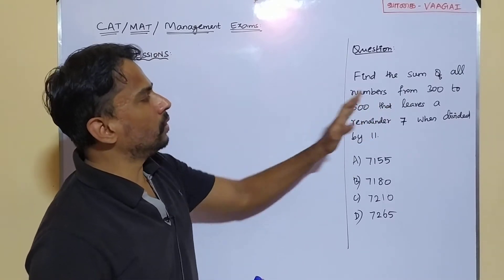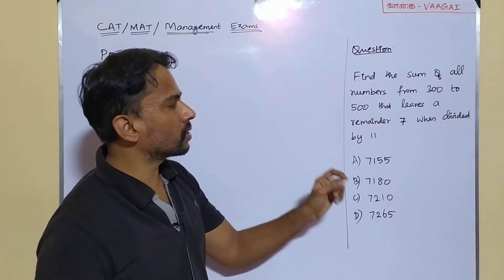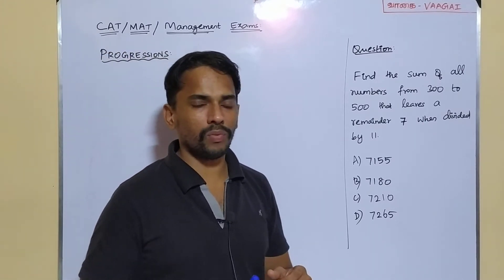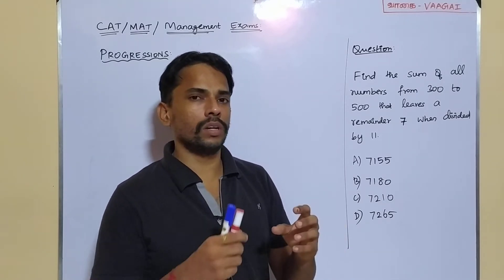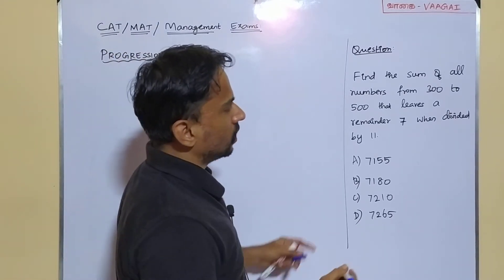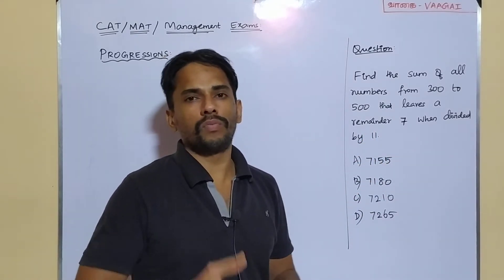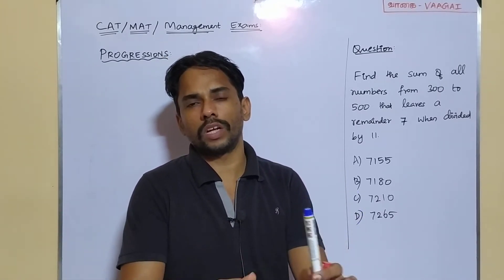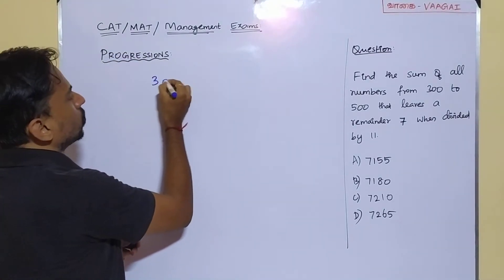Find the sum of all the numbers from 300 to 500 that leave a remainder 7 when divided by 11. So we are asked to find the sum of all numbers from 300 to 500, with the condition that each number when divided by 11 should leave a remainder of 7. Our range is 300 to 500.